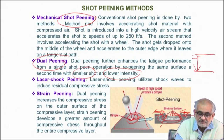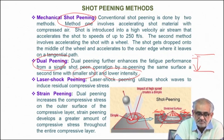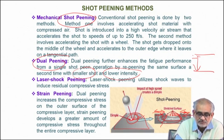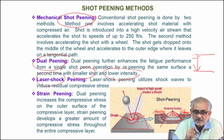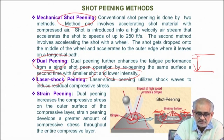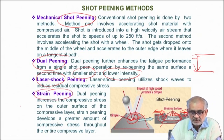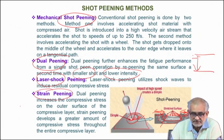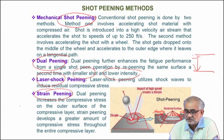Instead of mechanical impact, you can use a laser-assisted shock wave to create a residual compressive stress state on the surface. You can also do strain peening using other kinds of impacting objects.